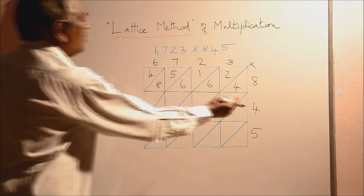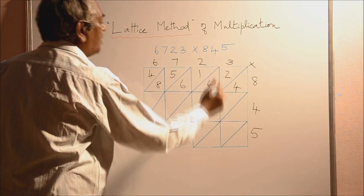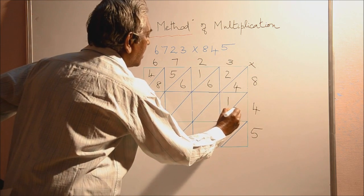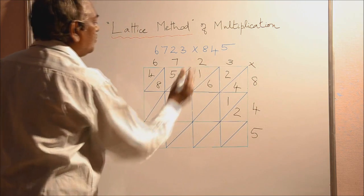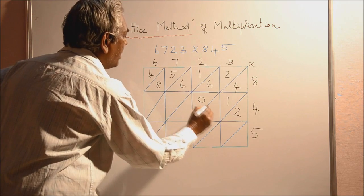Now for second row, we go with 4. 4, 3's are 12. Write 1 here, 2 here. 4, 2's are 8. For 8, we have to write 0, 8. Remember,